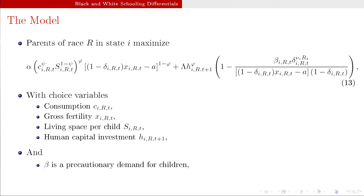Beta here is not the usual exponential discount factor — it's a precautionary demand for children. If infant mortality rates are high, you want a near-one probability of furthering your family line, so you have more children. It's like throwing a bunch of stuff at the wall: if the probability of sticking is low, you throw a lot; if it's high, you throw less. That's precautionary demand, and it's multiplied together with young adult mortality in the model.